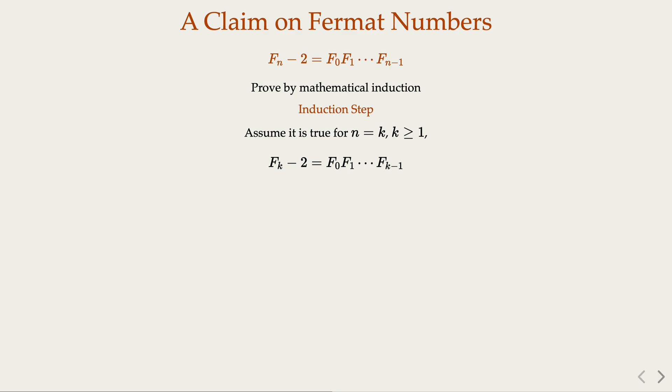So with the assumption that it is true for n equals k, in other words, this equation holds for Fk minus 2 equals the multiplication of all the Fermat numbers up to k minus 1.